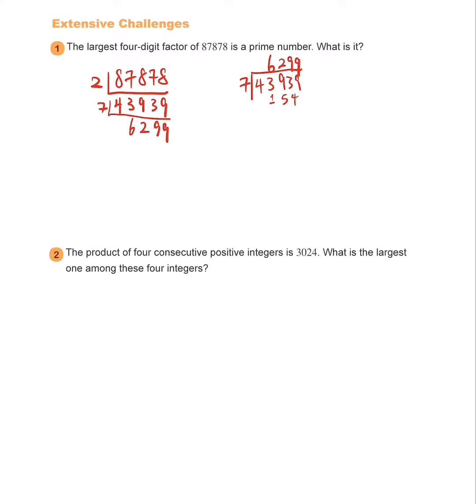So how can we know that 6,299 is the largest four-digit factor of it? Well, that's because it can't be multiplied by 2. And it is not divisible by anything that is smaller than 7, which means that you couldn't have divided 43939 by any other smaller numbers. So that's the reason why 6,299 is going to be the largest four-digit factor of 87878.